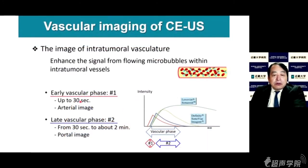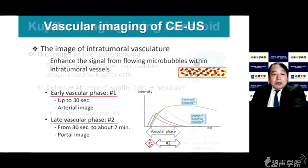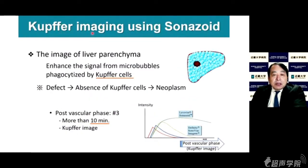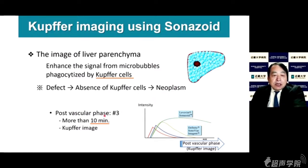There are two vascular phase imaging modalities: early vascular phase lasting up to 30 seconds, and late vascular phase from 30 seconds to around 2 minutes. Kupffer imaging using Sonazoid enhances the signal from microbubbles phagocytosed by Kupffer cells. Kupffer defect is produced by the absence of Kupffer cells, usually in neoplasm or cancer. The post-vascular phase lasts more than 10 minutes and is called Kupffer imaging.